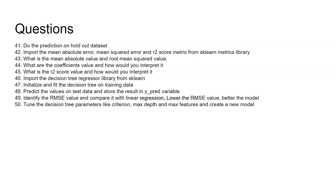Then tune the decision tree parameters like criterion, max_depth, and max_features to create a new model. The default criterion can be changed — for example, to MAE (mean absolute error). You can press Shift+Tab in Python to see help on parameters. Experiment with max_depth values from 5 to 10 and different criteria to see the output.